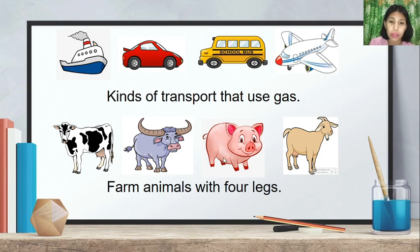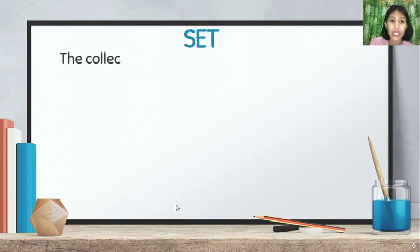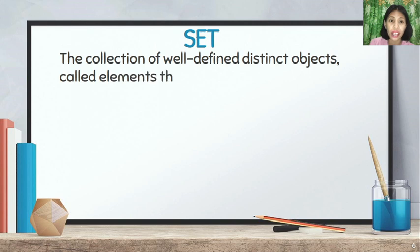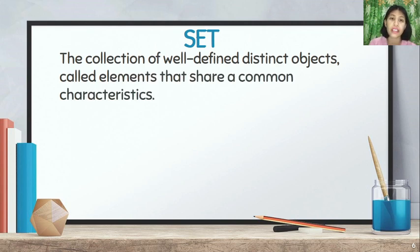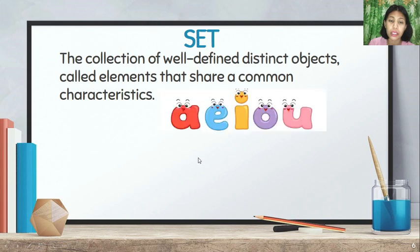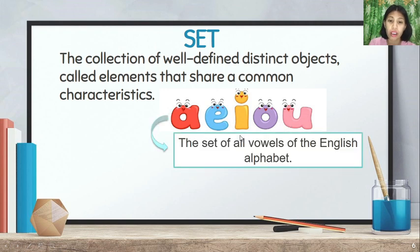These are an example of what we call sets. A set is the collection of well-defined, distinct objects called elements that share common characteristics. For example, the vowels A, E, I, O, and U form the set of all vowels of the English alphabet — they share a common characteristic.